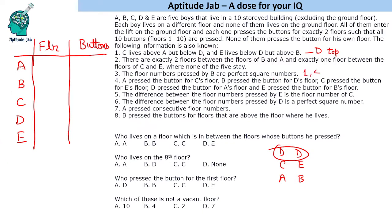The floor numbers pressed by B are perfect square numbers — so 1, 4, or 9. The pressing relationships are: A presses for C, B presses for D, C presses for E, D presses for A, and E presses for B. So if we know B's floor number, we know it was pressed by E.